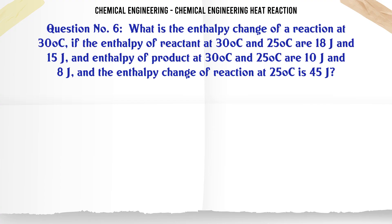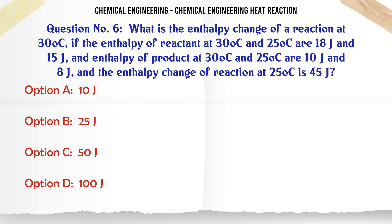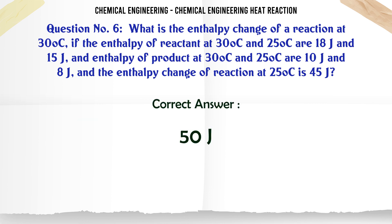What is the enthalpy change of a reaction at 300°C if the enthalpy of reactant at 300°C and 25°C are 18J and 15J, enthalpy of product at 300°C and 25°C are 10J and 8J, and the enthalpy change of reaction at 25°C is 45J? The correct answer is 50J.